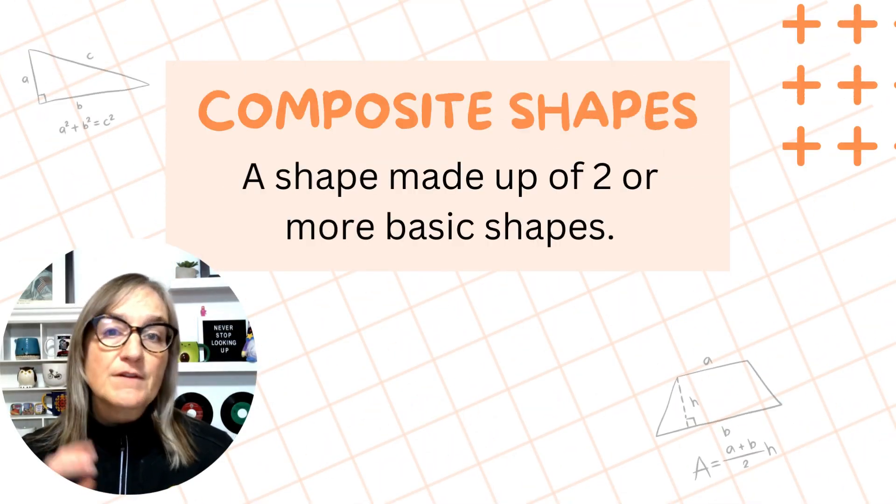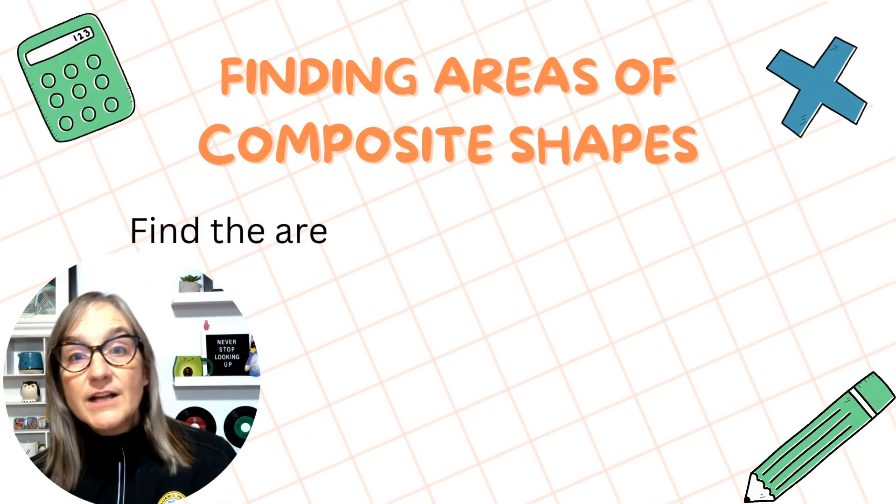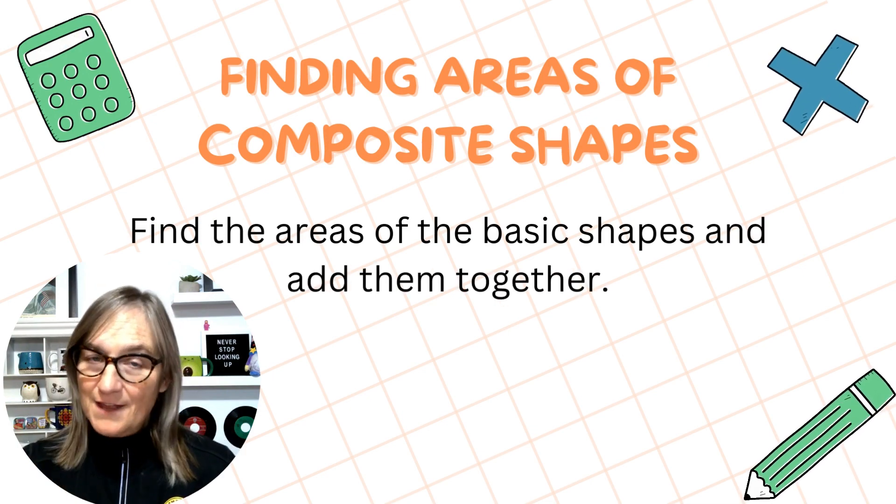Before we begin talking about how to find the areas of composite shapes, we need to understand what composite shapes are. A composite shape is a shape made up of two or more basic shapes. We can find the areas of composite shapes by finding the areas of the basic shapes and then adding them together.